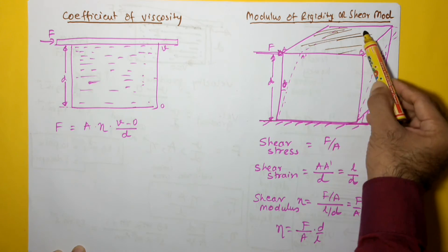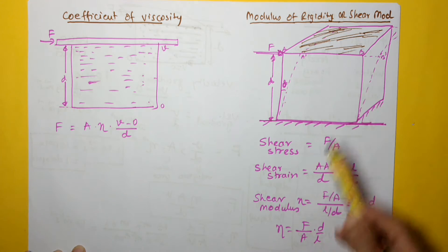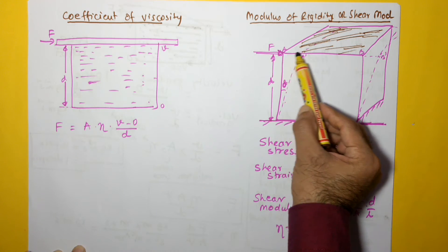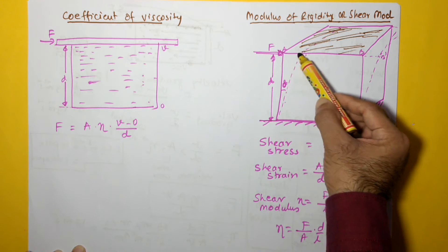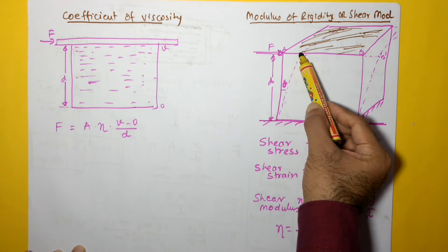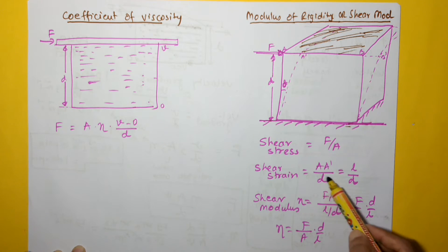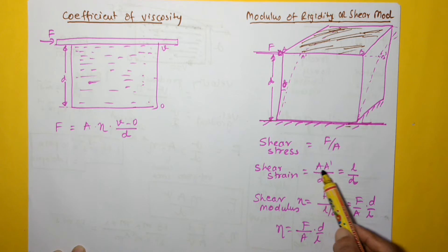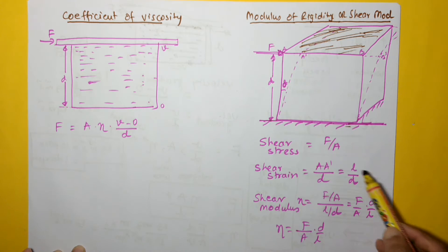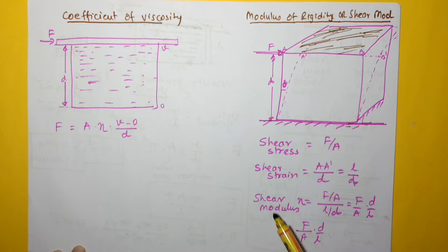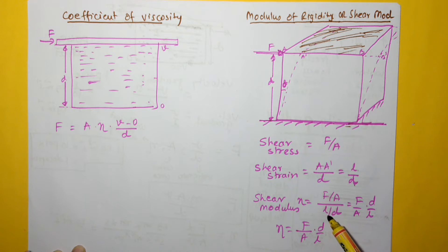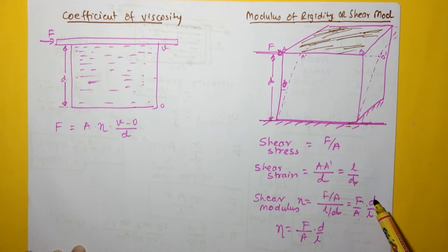The shear strain that gets developed is the deflection — let's call it L — divided by the distance D of the top surface from the fixed surface. So shear strain is L by D. Shear modulus η is shear stress upon shear strain, which is (F/A) divided by (L/D). This gives us the equation: F = η · A · (L/D).